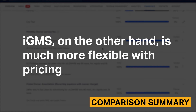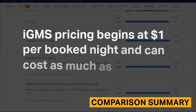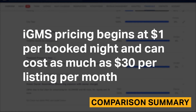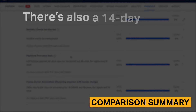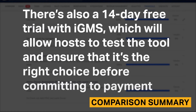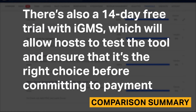IGMS, on the other hand, is much more flexible with pricing. IGMS pricing begins at $1 per booked night and can cost as much as $30 per listing per month. There's also a 14-day free trial with IGMS which allows hosts to test the tool and ensure that it's the right choice before committing to payment.